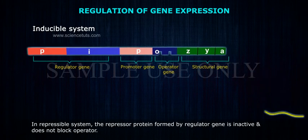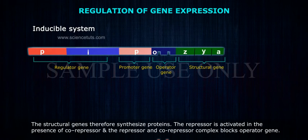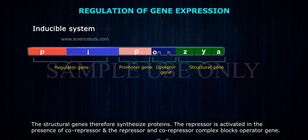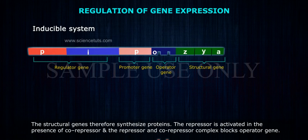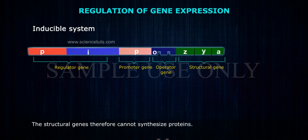In a repressible system, the repressor protein formed by the regulator gene is inactive and does not block the operator. The structural genes therefore synthesize proteins. The repressor is activated in the presence of a co-repressor, and the repressor-co-repressor complex blocks the operator gene. The structural gene therefore cannot synthesize proteins.